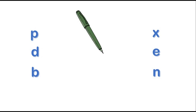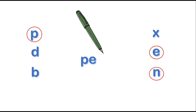Look at the next one. What's this? It's a pen. What are the letters of the word pen? What is the first letter? P. E. N. P, E, N. What's this? Pen.